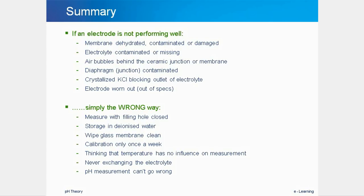As a brief summary of what one should and shouldn't do with pH measurement: causes of poor electrode performance include a dehydrated, contaminated or damaged membrane, missing or contaminated electrolyte, air bubbles behind the ceramic junction or membrane, a blocked or contaminated junction, or the electrode simply being worn out. What should never be done is keeping the filling hole closed when measuring, storing the electrode in deionized water, or wiping the membrane clean. The electrode should be calibrated often enough, temperature influence must be taken into account, the electrolyte should be changed regularly, and one should never take the measurement for granted.